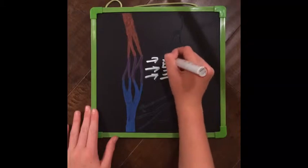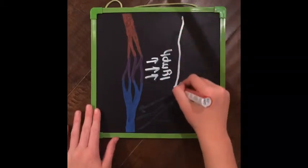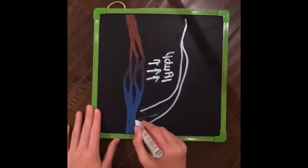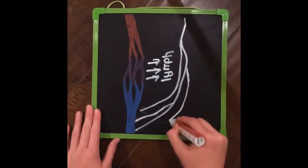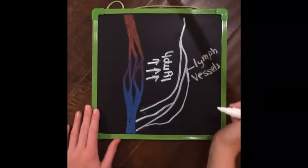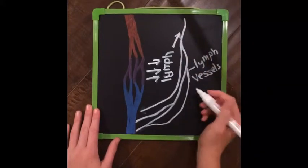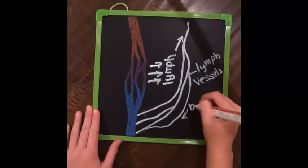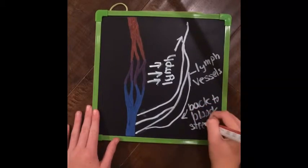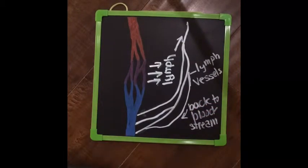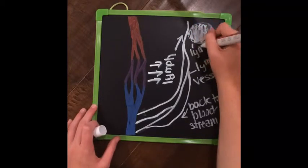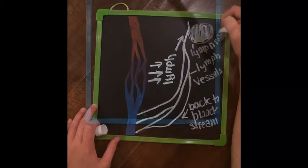Blood is pumped so powerfully by the heart that a liquid is squeezed out of the capillaries called lymph. Lymph is the excess fluid and tissue made up of white blood cells that drains into the bloodstream through the lymphatic system. The lymphatic system is made up of the lymph nodes, lymph vessels, and lymph. Its main purpose is to return fluids gathered in the tissues to the bloodstream. Unlike the cardiovascular system, the lymphatic system does not form a complete circuit but transports fluids one way back to the bloodstream.